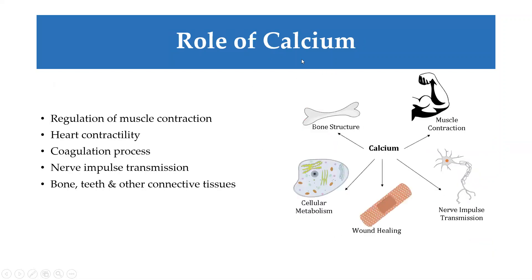Before we see the effects, we need to understand the role of calcium in the body. Calcium and phosphate play a very important role in body function. The most important roles include regulation of muscle contraction and nerve impulses. Calcium also plays a part in heart contractility, the coagulation process, bone formation, teeth, and other connective tissues.